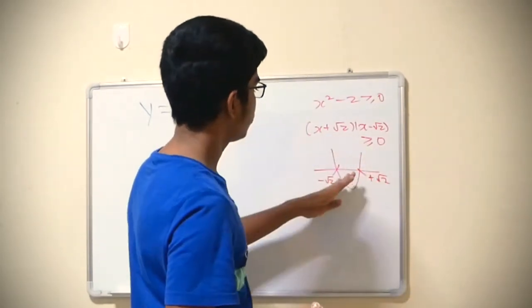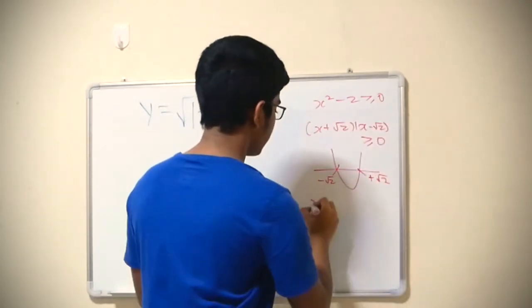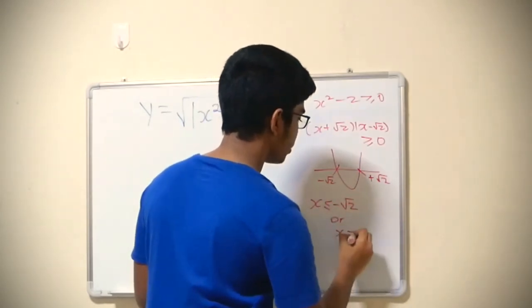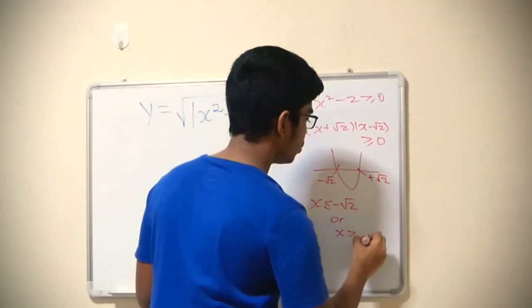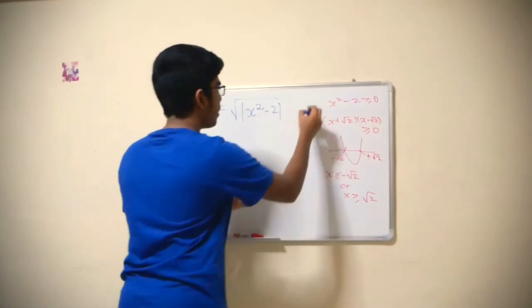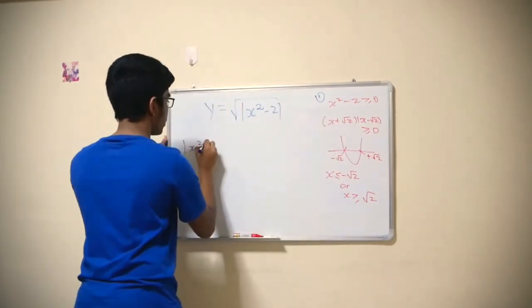Then you choose this part and this part, so x less than or equal to minus root 2 or x greater than or equal to root 2. So how do you actually define the piecewise function? x squared minus 2 just copy over.